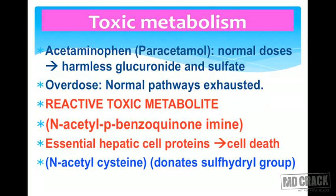Now an example of toxic metabolism — acetaminophen (paracetamol). In normal doses it is fine; it gets converted into harmless glucuronide and sulfate metabolites. But if you give acetaminophen in large doses, especially in children, due to overdose the normal metabolic pathways get exhausted.